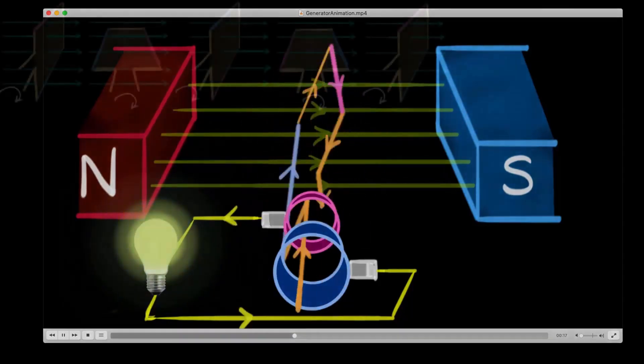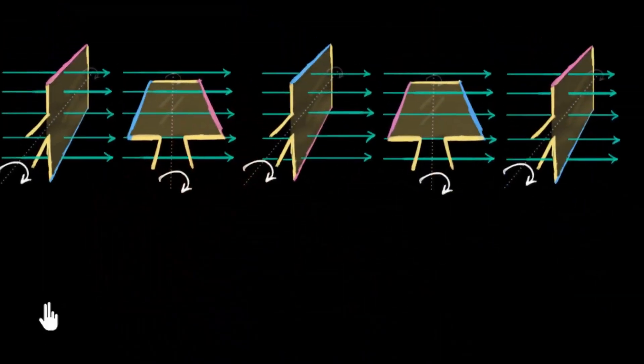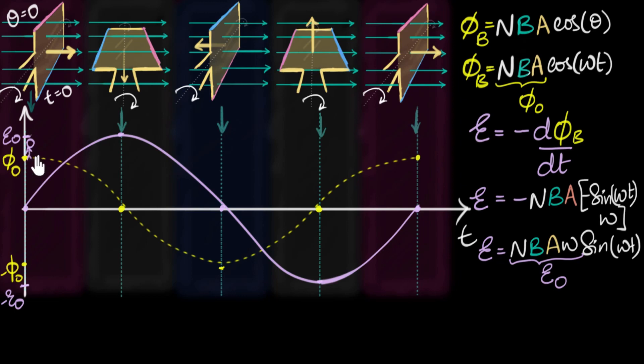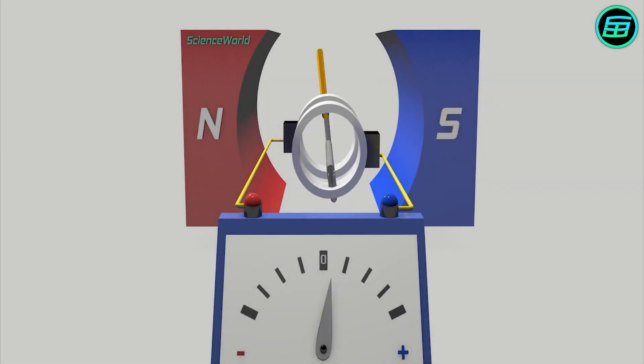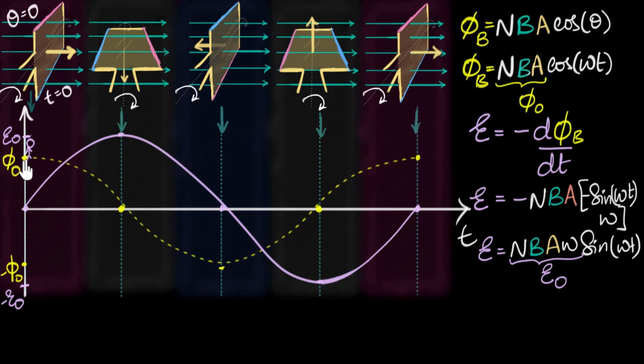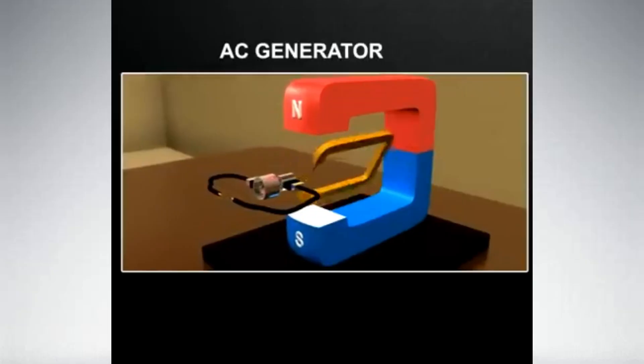However, there are a few key factors that affect the magnitude of the induced current. First, the strength of the magnetic field. The stronger the field, the greater the induced current. Second, the speed at which the conductor moves through the field. The faster the movement, the higher the induced current. And third, the angle at which the conductor cuts through the magnetic field. The more perpendicular the angle, the greater the induced current.